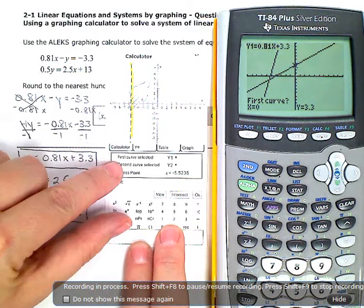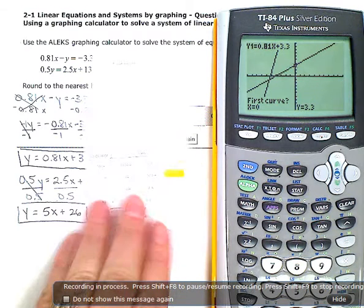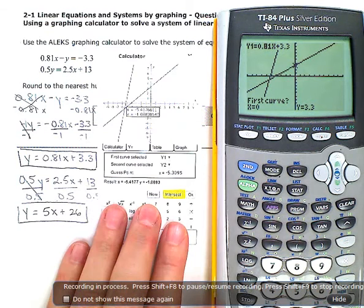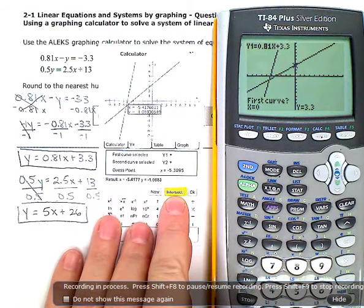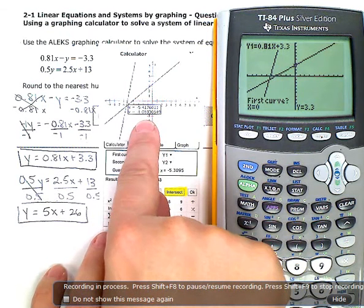And then your last thing that you're going to do is hit the, oops, not that one, this one. You're going to hit intersect right here again. And then it will show you the coordinates to the solution right here in this little box on the screen.